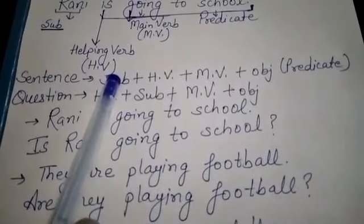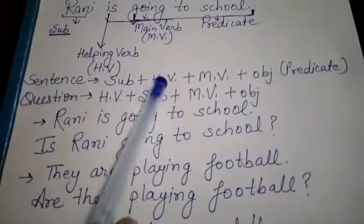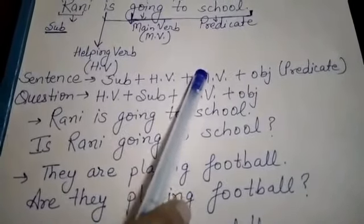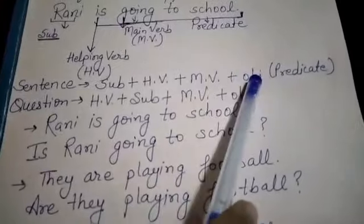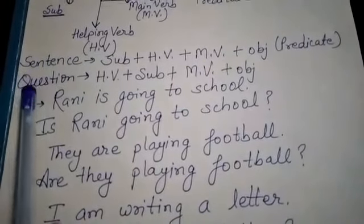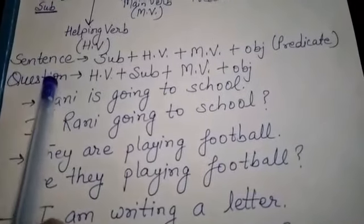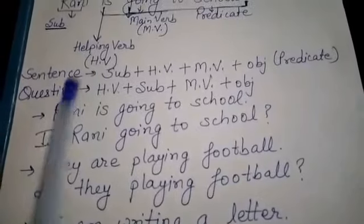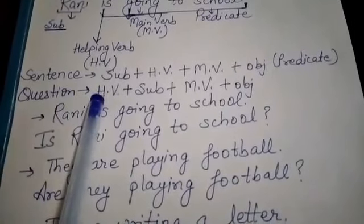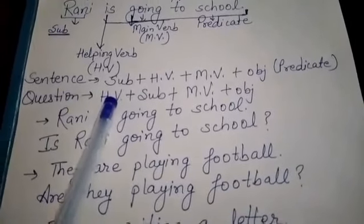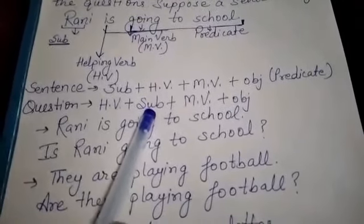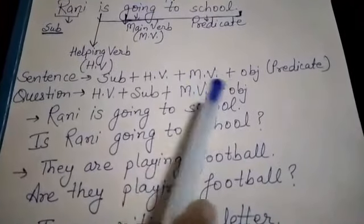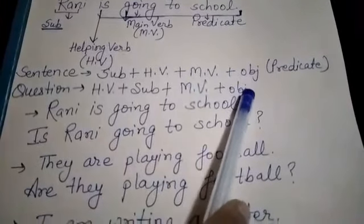یعنی کہ پہلے subject آئے گا، پھر helping verb، پھر main verb اور then object. But to frame questions — یعنی کہ questions بنانے کے لیے — پہلے helping verb آئے گی، اس کے بعد subject آئے گا، اس کے بعد main verb and then object.